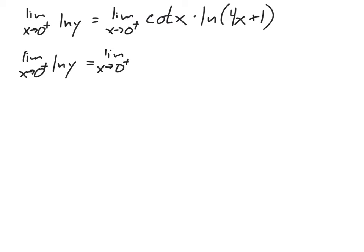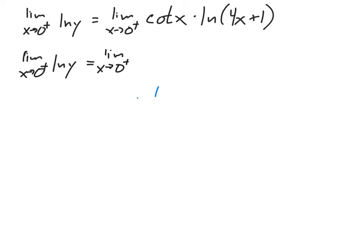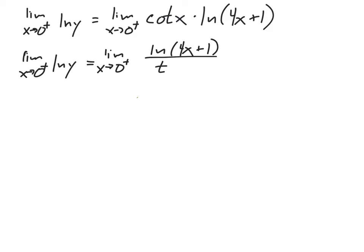The natural log should be on top, so I want to turn the cotangent of x into the fraction part. I could turn cotangent into cosine over sine, but it gets messy. It's actually easier to think of cotangent as 1 over tangent. So I'm going to write this as the natural log of 4x plus 1 over tangent of x.